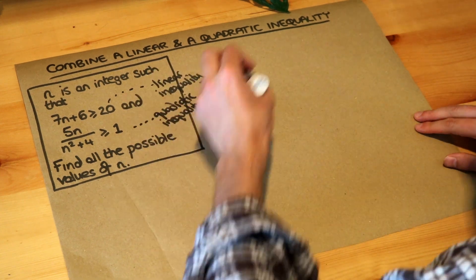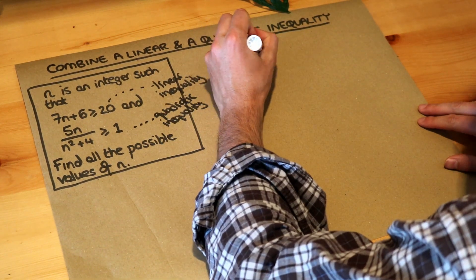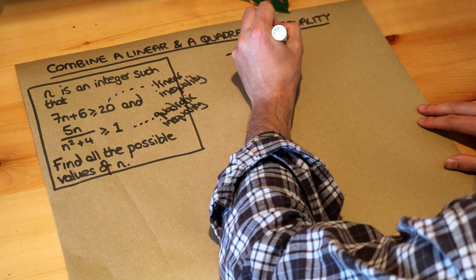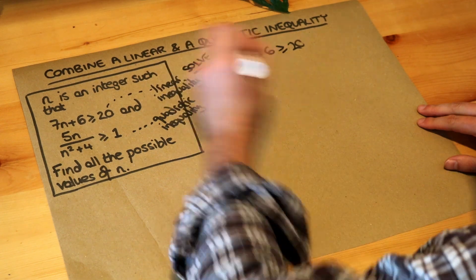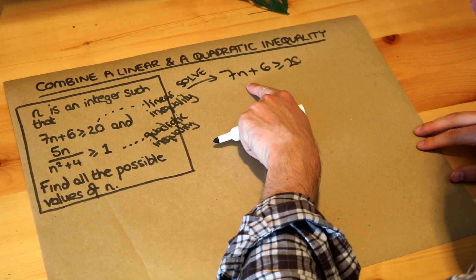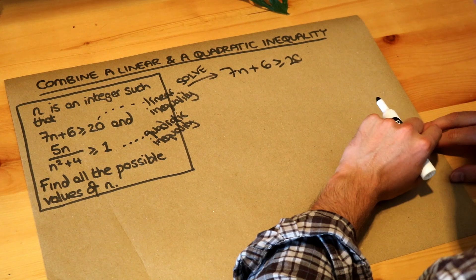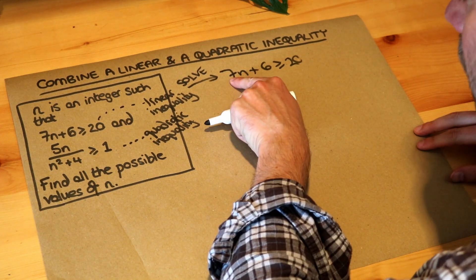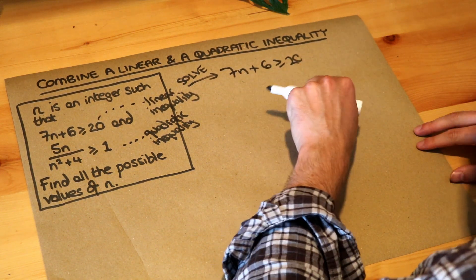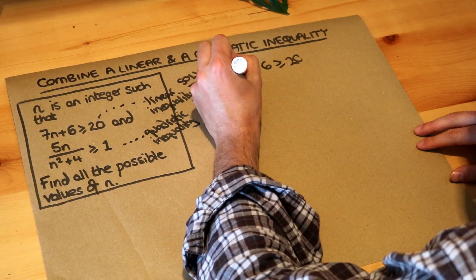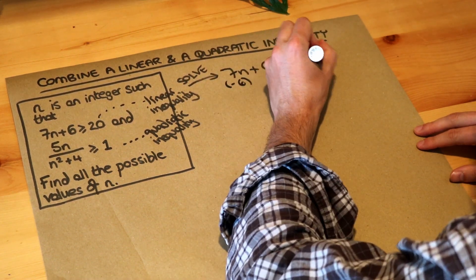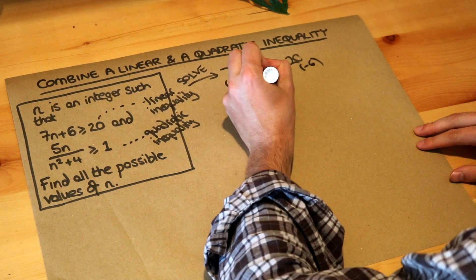We have techniques for solving each of these kind of things. So let's solve the first one. So 7n plus 6 is greater than or equal to 20. We're going to solve that first. We just need to get the n on its own on one side of the inequality. The n has been multiplied by 7, we're then adding 6. So let's undo that. We want to undo the add 6 first. We're going to subtract 6 from both sides to give us 7n is greater or equal to 14.